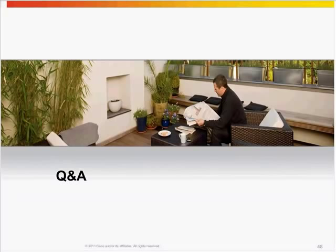Next question: What is the maximum number of VCS within a cluster? Each VCS supports 2,500 registrations and you are able to have six VCSs in a full cluster, but only four of these will be active. That means you can have 10,000 endpoint registrations per cluster.